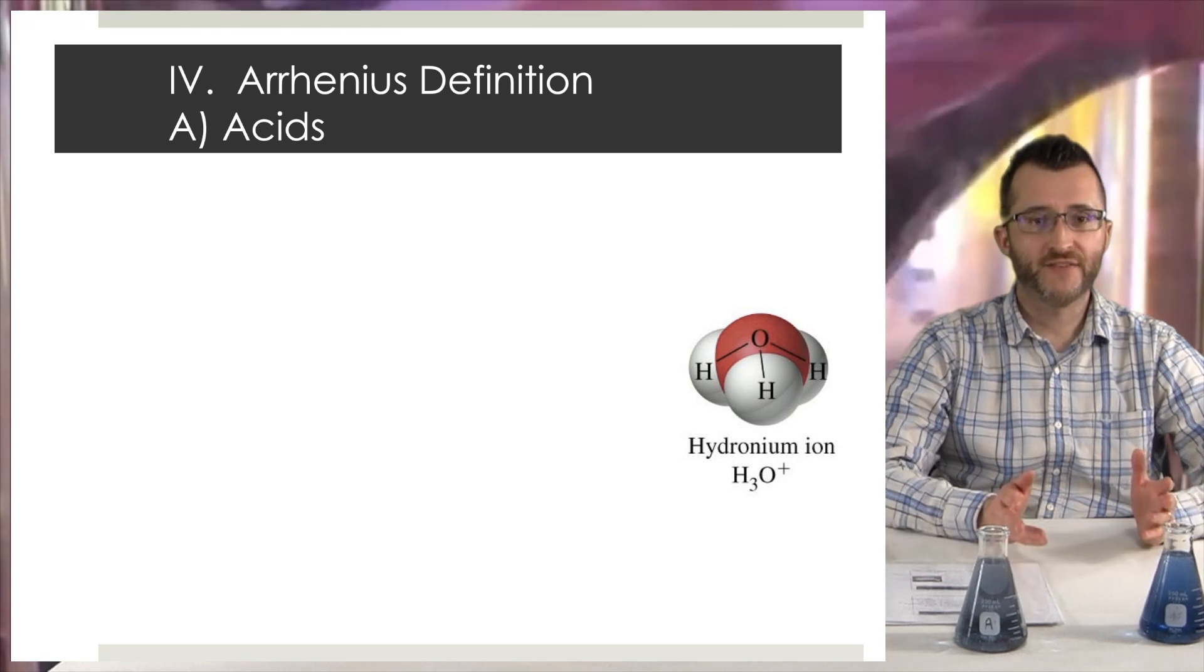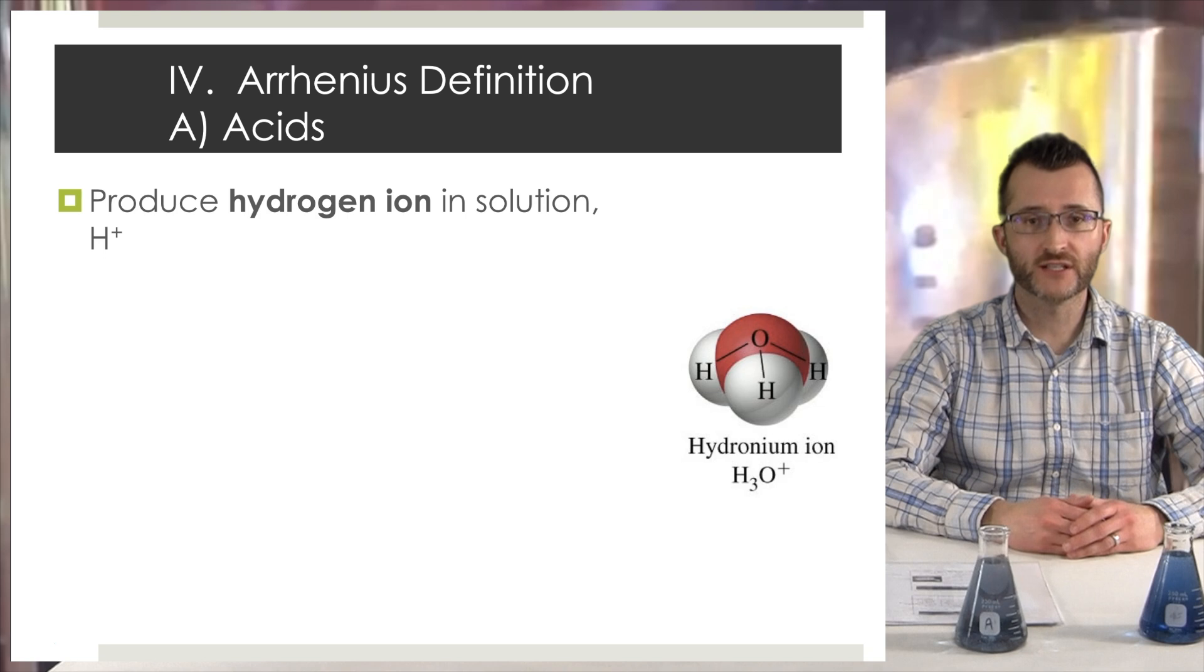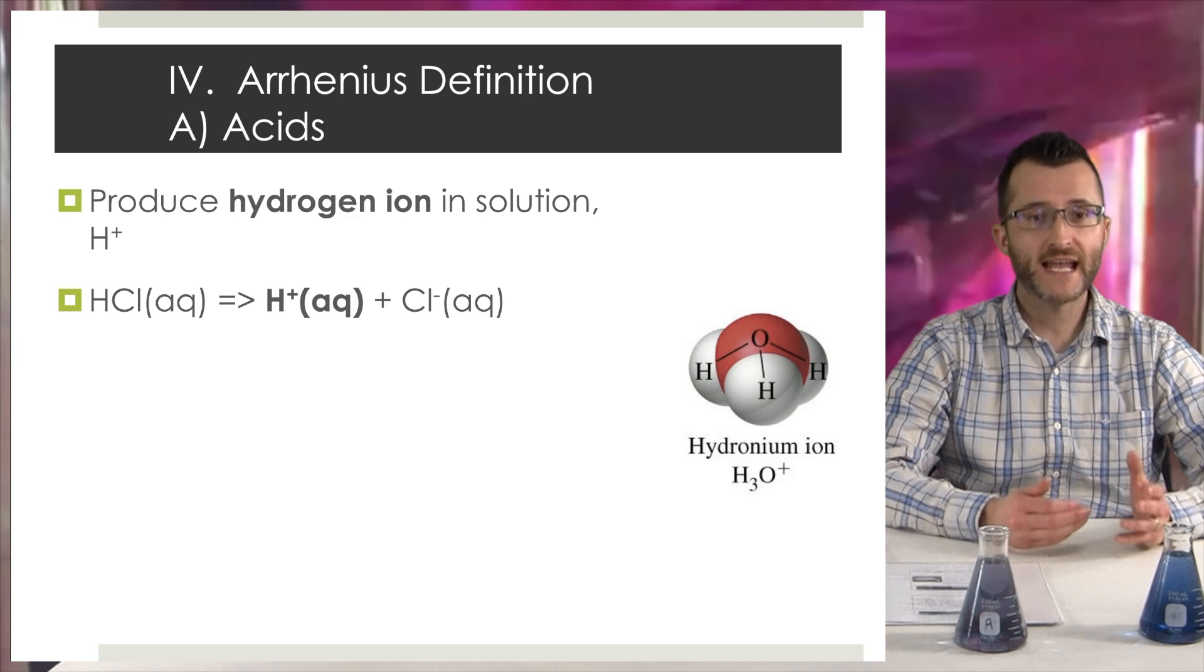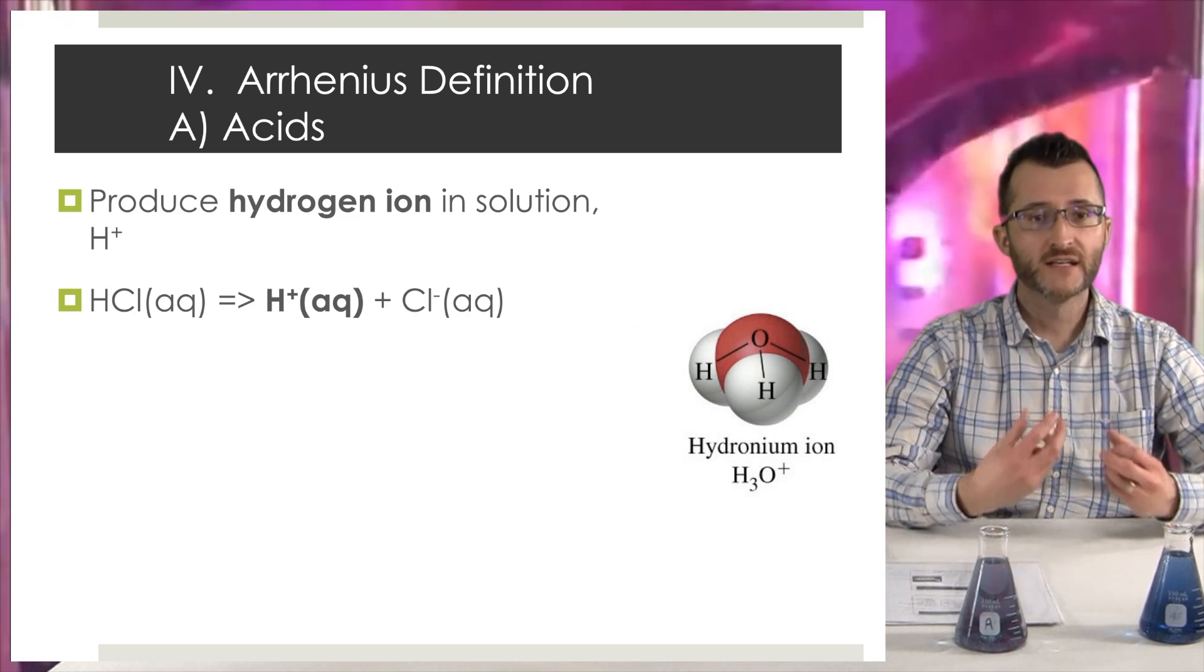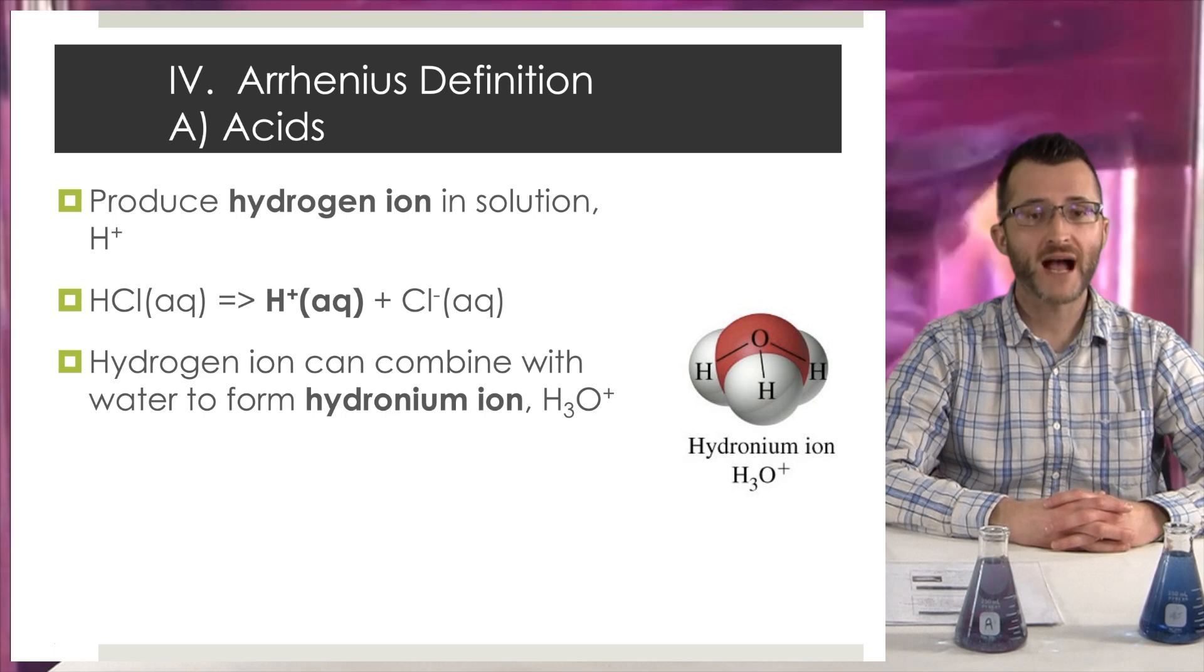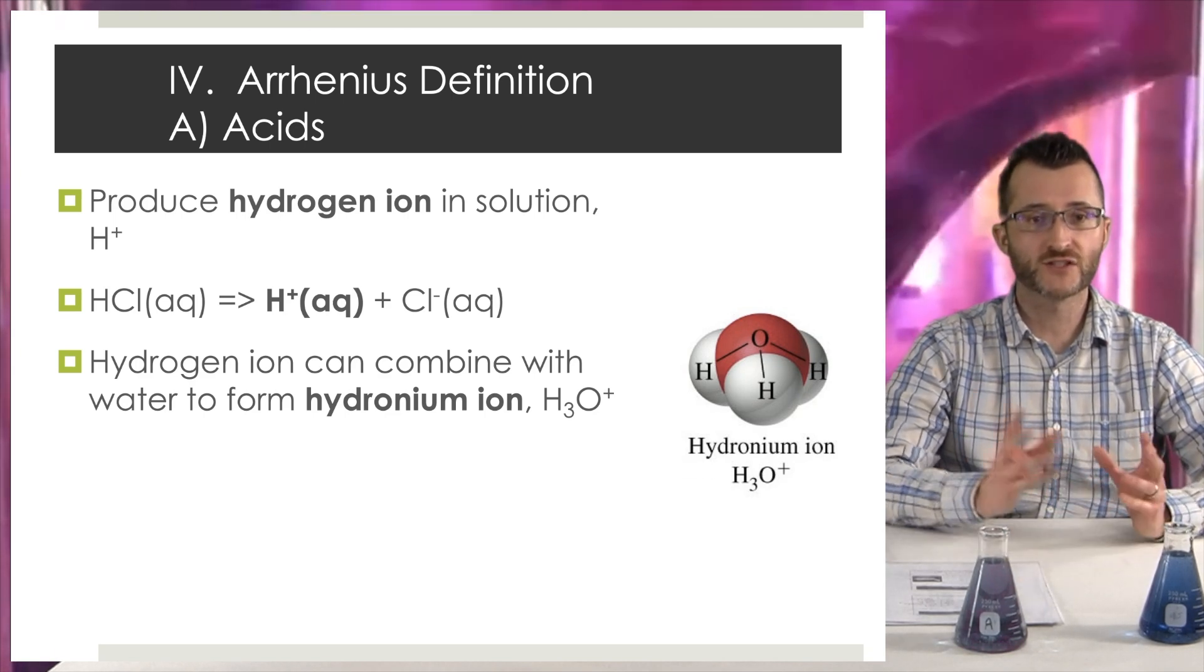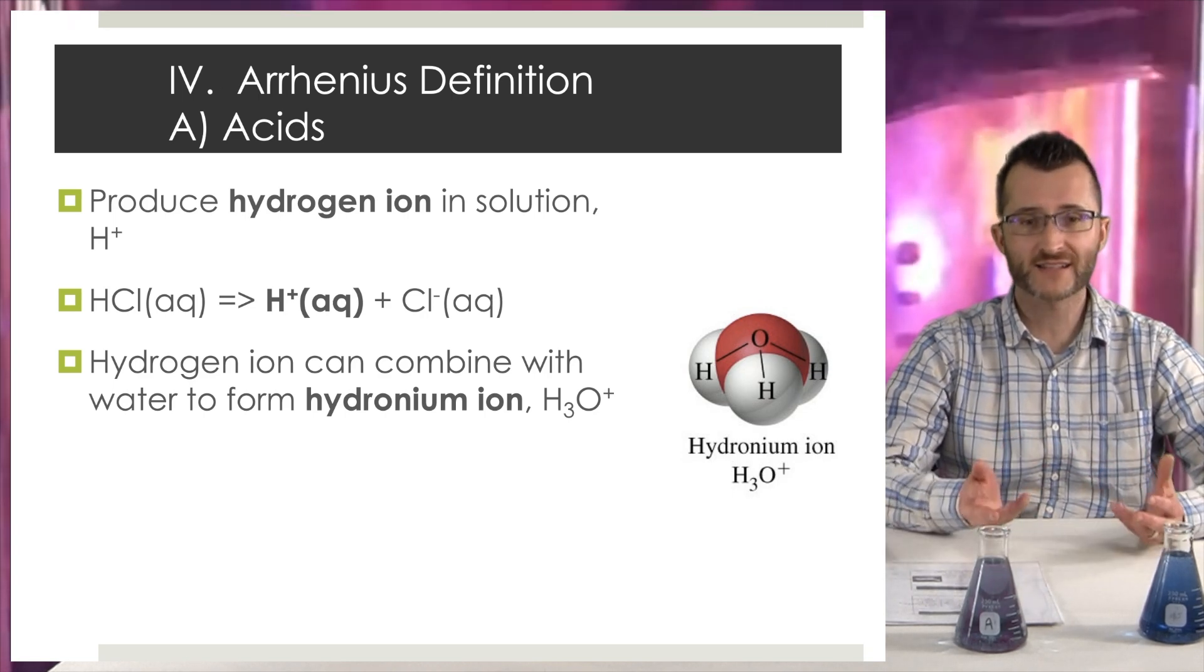The Arrhenius definition for acids. Acids produce hydrogen ion in solution or H+. Looking at this example, we have HCl aqueous yield H plus aqueous plus Cl minus aqueous. So the HCl in water is breaking down into H plus ion and Cl minus ion. Hydrogen ion can combine with water to form hydronium ion. The formula for hydronium ion is H3O plus. It's just water with hydrogen, H plus.